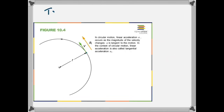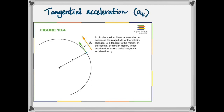If the disk is speeding up, then at every point there is going to be a linear acceleration, also called tangential acceleration. Imagine the disk starts spinning slowly and then increases its speed — at every point it has a linear acceleration.